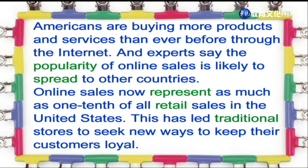我们可以看到美国人透过网络来购买商品还有服务的趋势是越来越流行了。More products and services than ever — more than ever就是比以前还要更流行的意思。那同学可以看到through the internet，我们是用through这个介词。下面一句话，the popularity of online sales，就是线上销售的普及性，is likely to — 可能的意思 — 可能还会散布到其他的国家去。